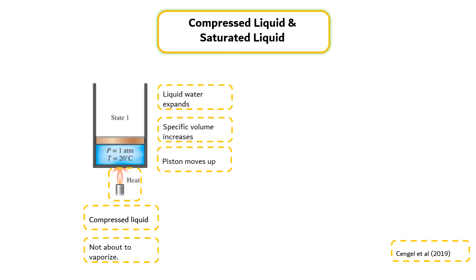The pressure in the cylinder remains constant at 1 atmospheric pressure during this process since it depends on the outside barometric pressure and the weight of the piston, both of which are constant. Water is still a compressed liquid at this stage since it has not started to vaporize.